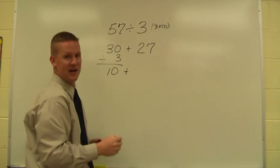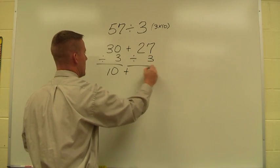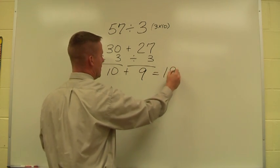I bring down my plus sign to make sure I don't forget that I'm adding it back together, and then I divide the 27 by 3 as well. Here I get 9. I take my 10 plus 9, add it back together: 19.